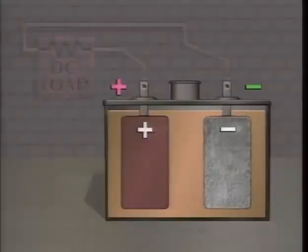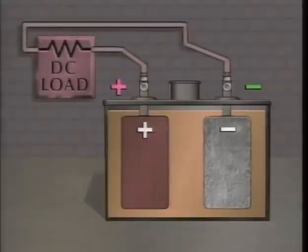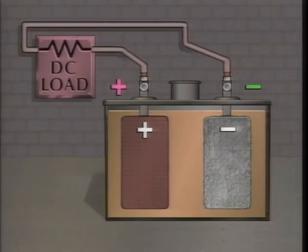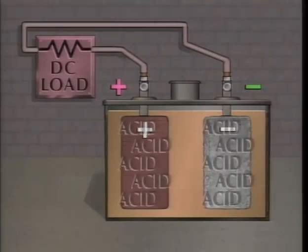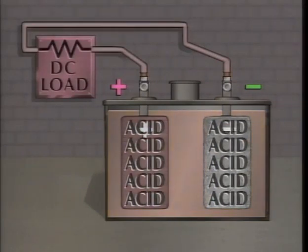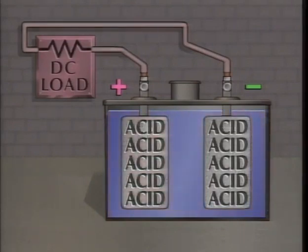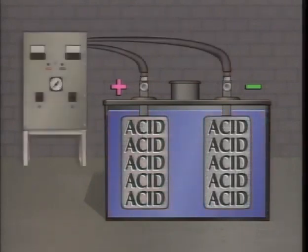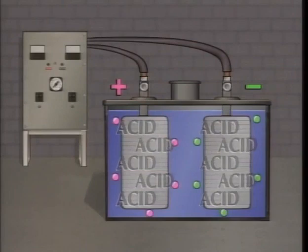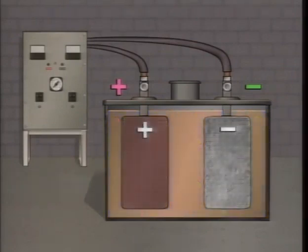You may also know that as a cell discharges, the specific gravity of the electrolyte decreases because sulfuric acid leaves the electrolyte and combines with the lead in the plates. As the cell is recharged, the specific gravity increases because the sulfuric acid is driven off the plates and back into the electrolyte.